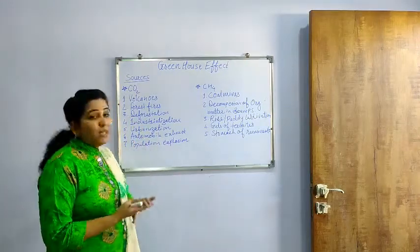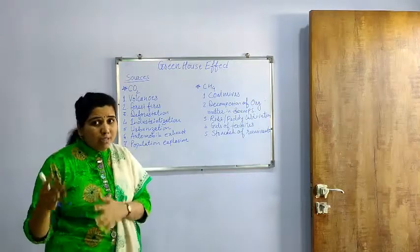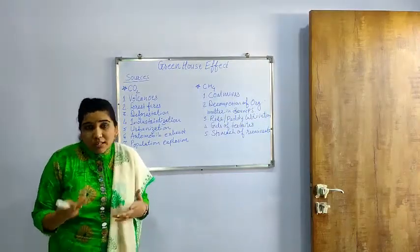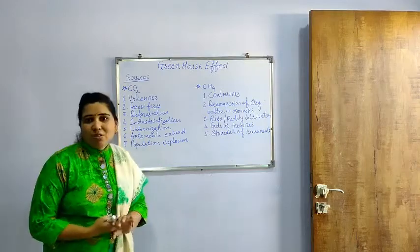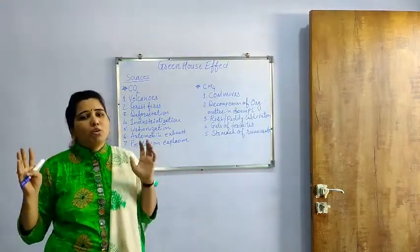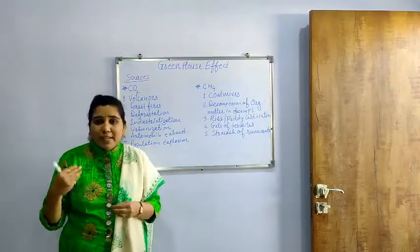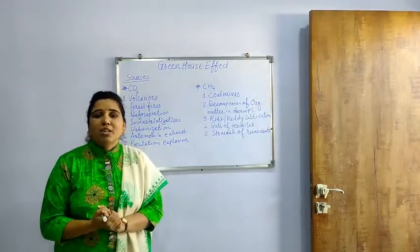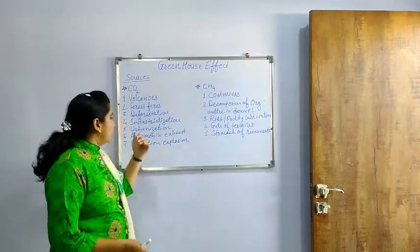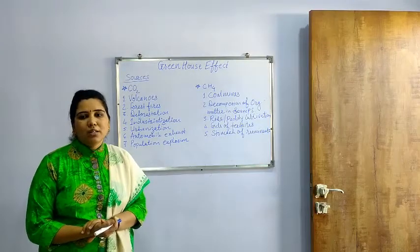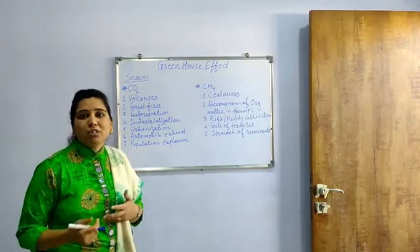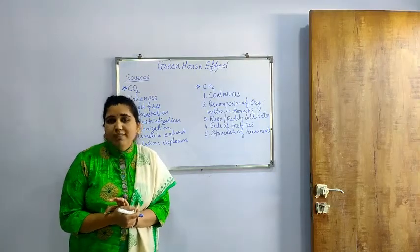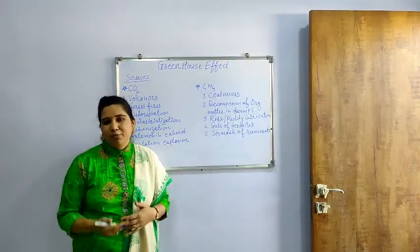Under man-made sources, there is deforestation — the cutting of trees or plants for different purposes or for a luxurious life. Then industrialization: in industries, a lot of smoke including different gases, water vapor, carbon dioxide, and methane is released into the atmosphere, which ultimately helps increase the temperature. Then urbanization: a number of trees are cut to get more space or land. Automobile exhaust is also a major source, as a lot of automobiles release carbon monoxide, which ultimately forms carbon dioxide.